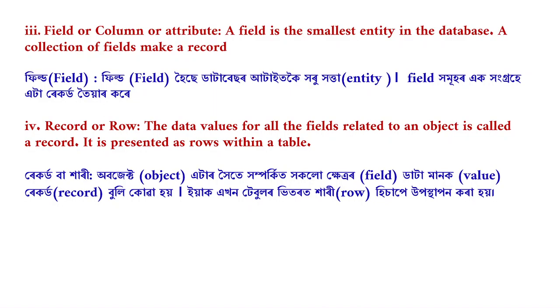Number 4: Record or Row. The data values for all the fields related to an object is called a record.